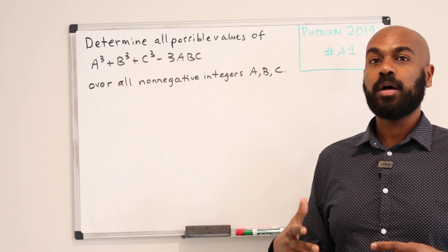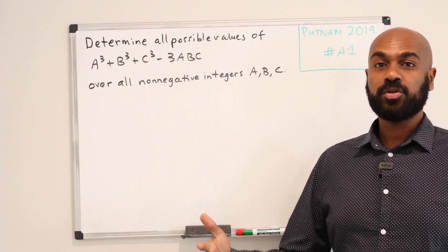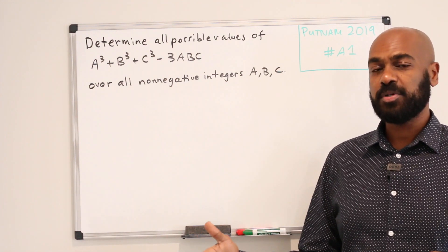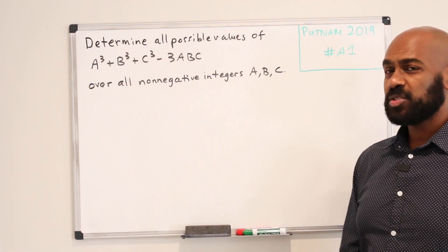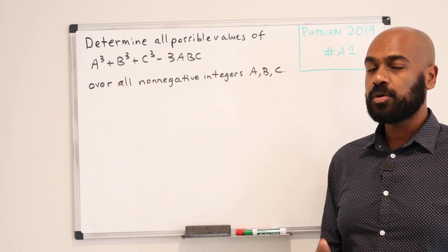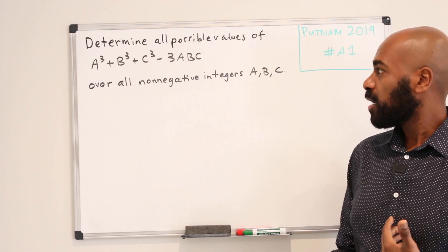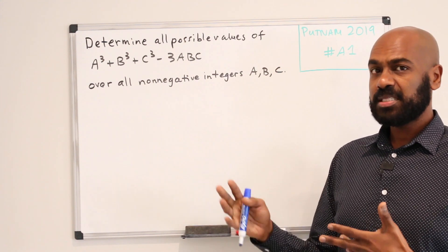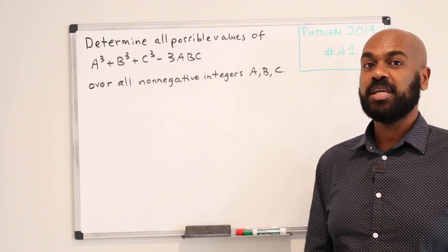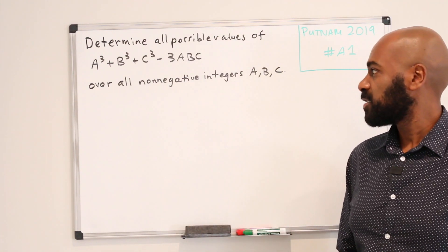So typically on the Putnam, A1 is a problem you can kind of sink your teeth into and if you make your way toward a solution, the solution write-up is typically short. This A1, in my opinion, was an exception. There are multiple steps and it requires a factorization that isn't standard. So I want to talk about the solution to give us more insight on these interesting factoring techniques because maybe we can use them outside of the context of this problem.